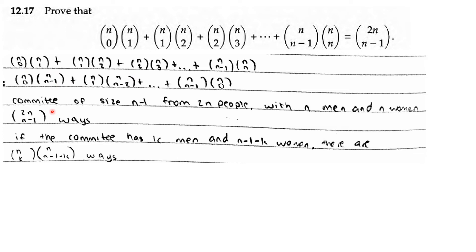There are 2n choose n minus 1 total ways. If the committee has k men and n minus 1 minus k women, then there are n choose k times n choose n minus 1 minus k ways to form such a committee.